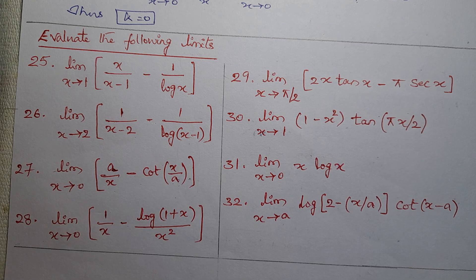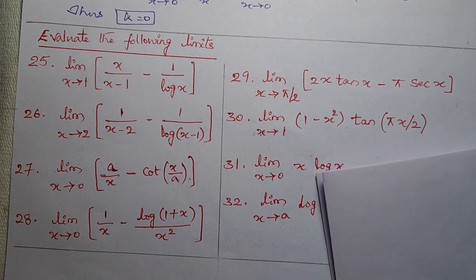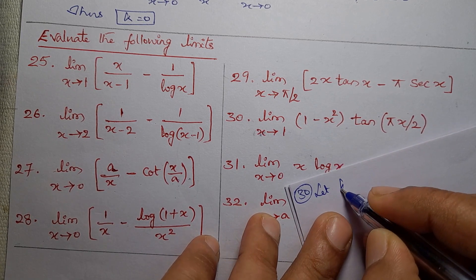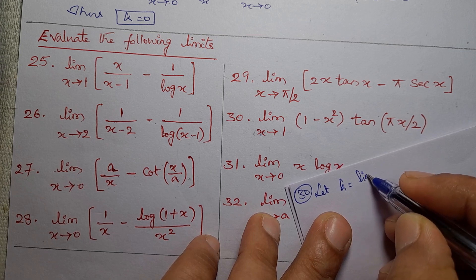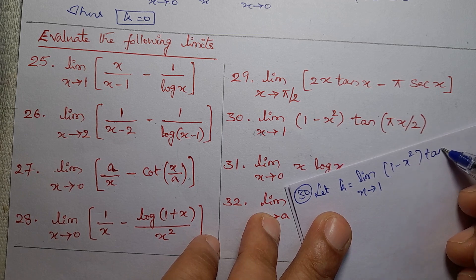Subject: Engineering Mathematics, Module: Differential Calculus 2, Article No. 2.2, Sub-article No. 2.21 — L'Hôpital's Rule, Type 1. Evaluate the following limits. Problem No. 30. Let K equal to the limit as x tends to 1 of (1 minus x squared) times tan(πx/2).